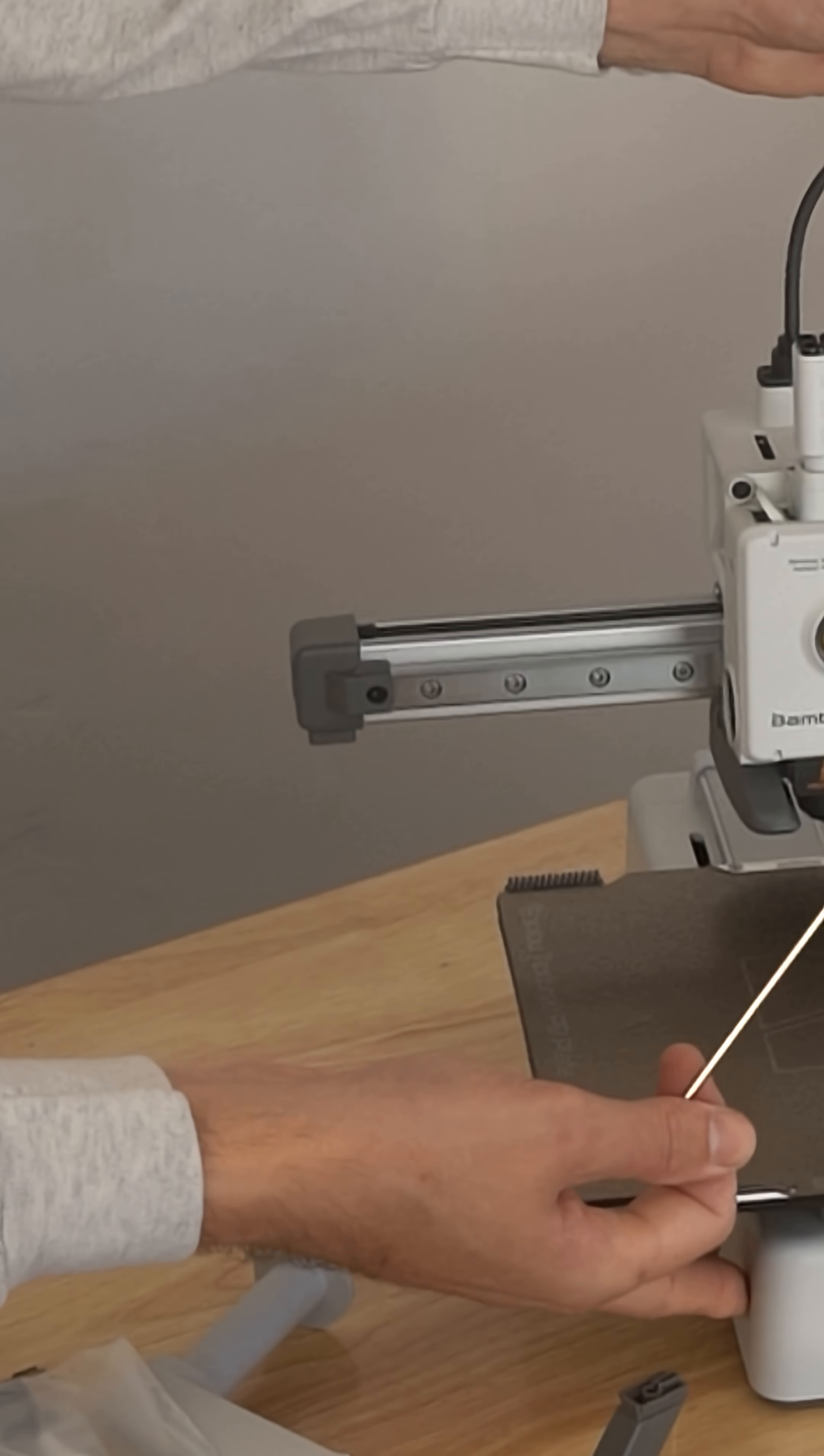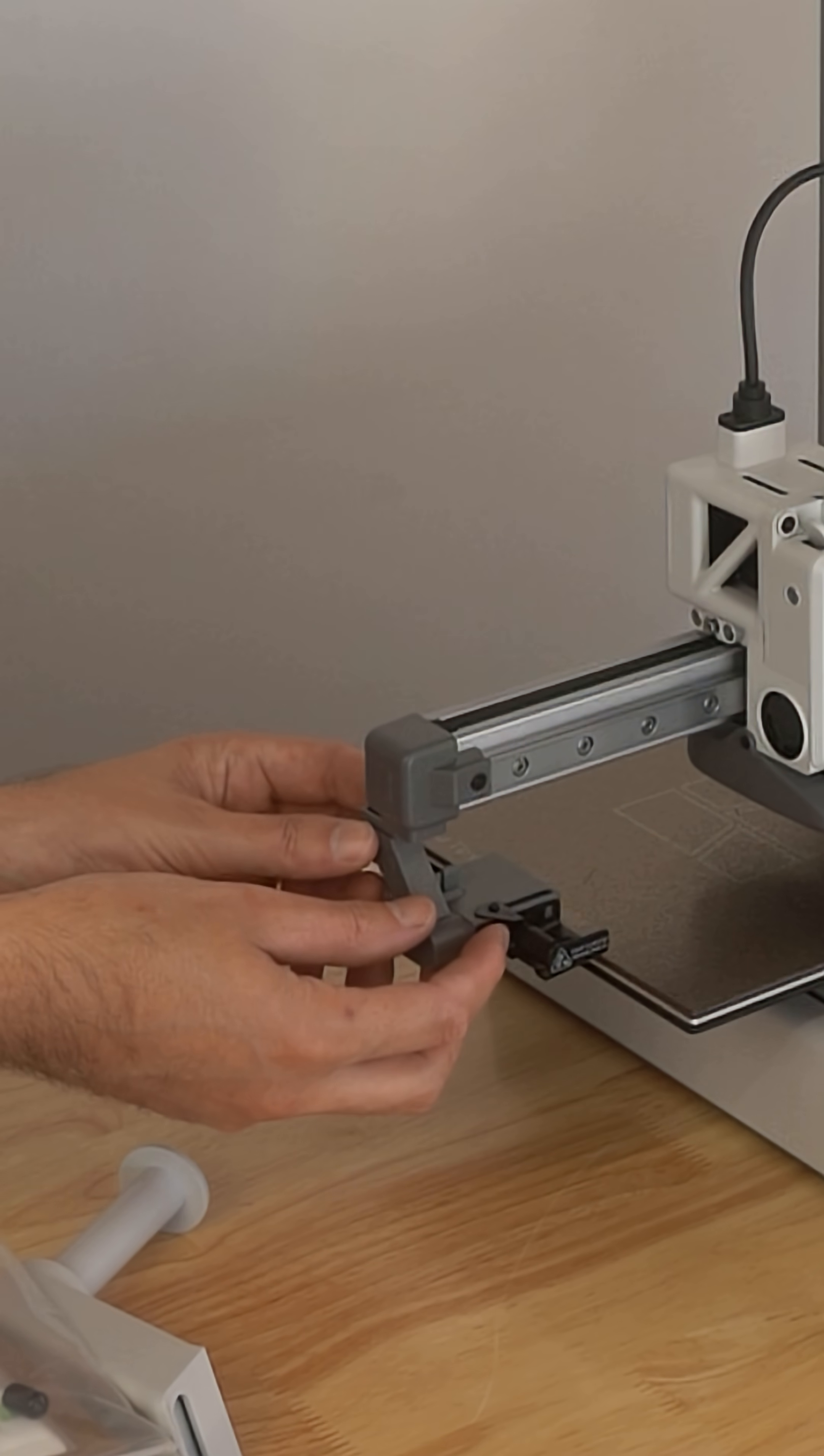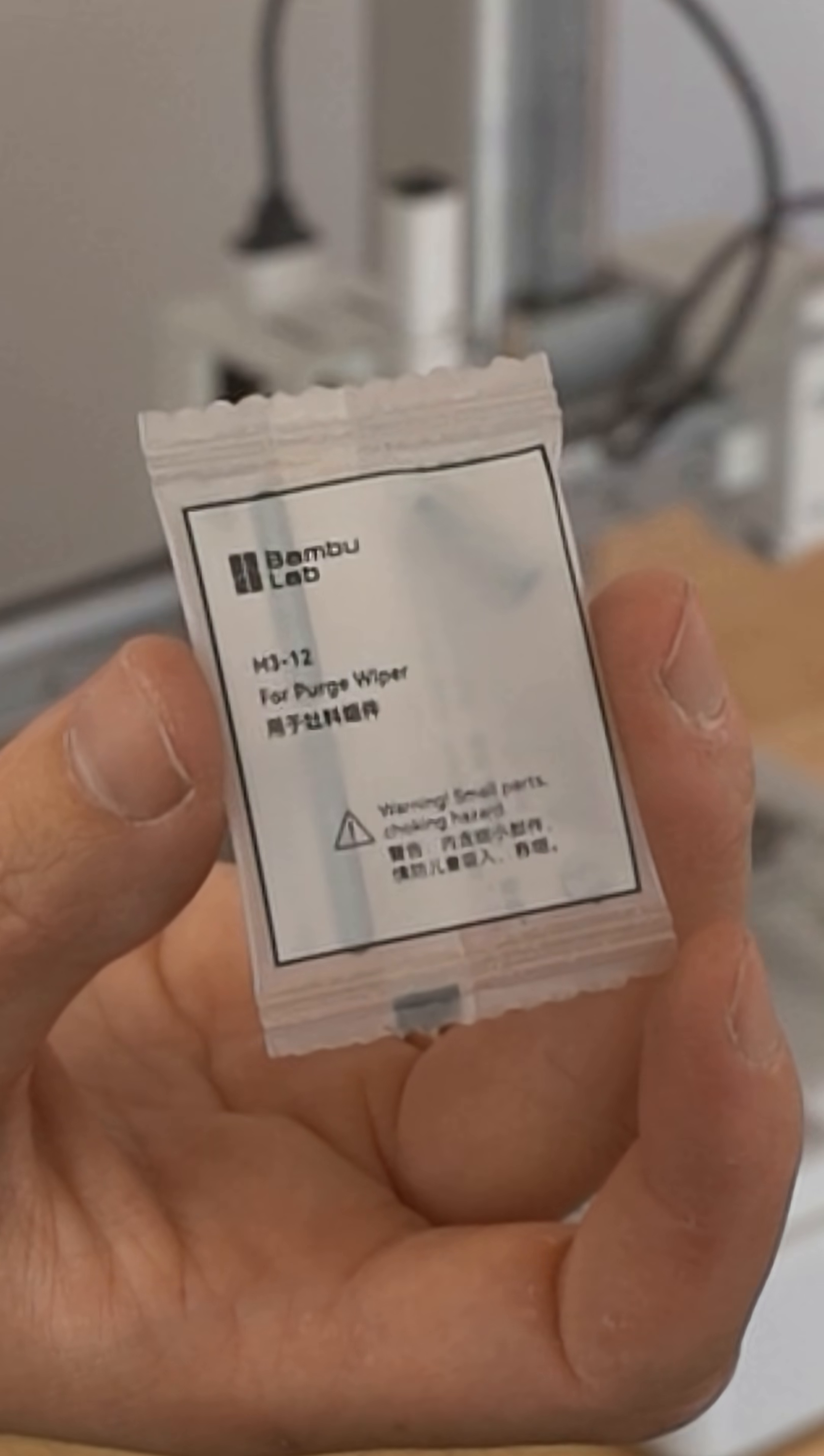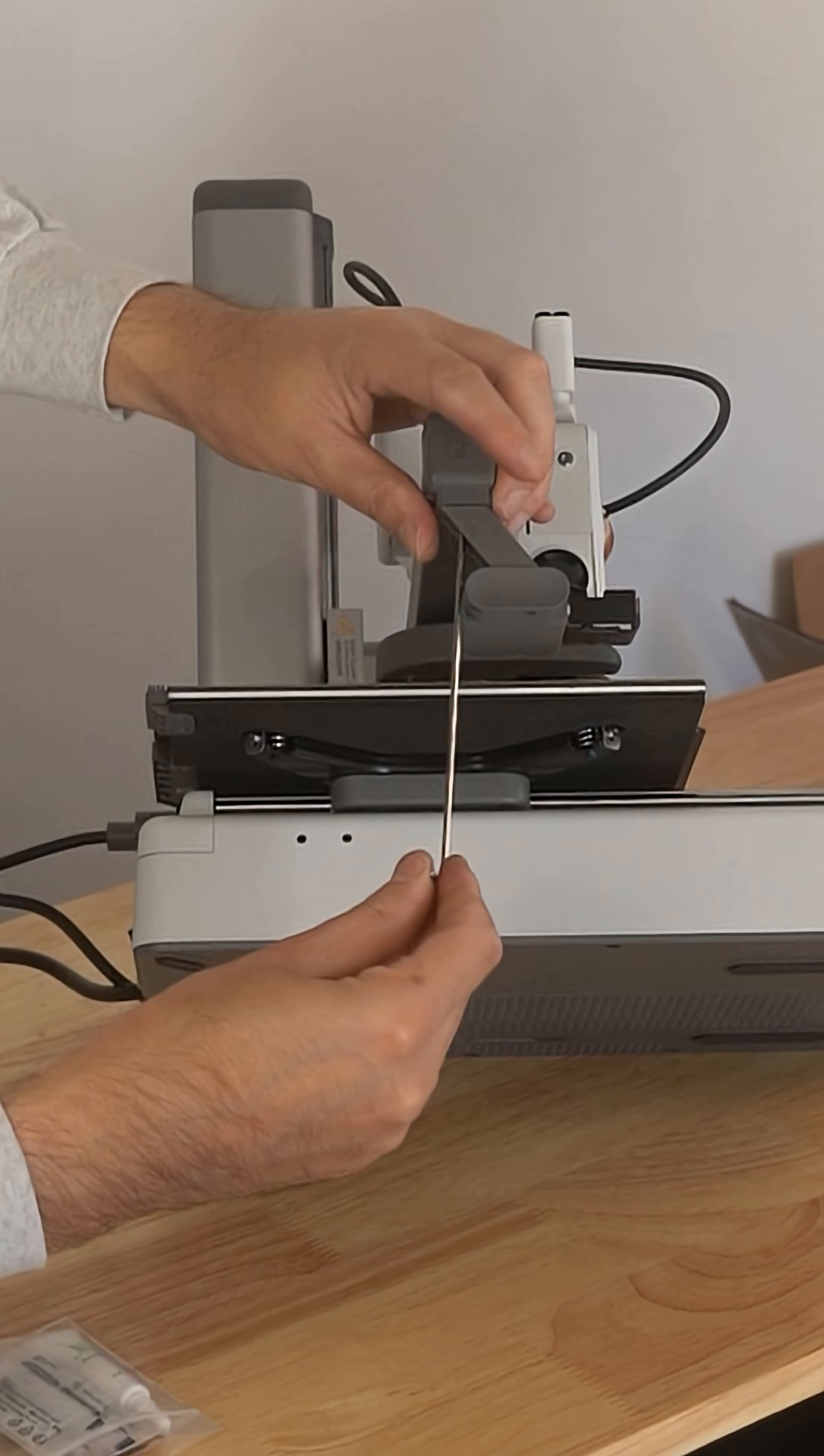Next, we'll need to install what's called the scraper. This is the scraper here. It slides in from the back like so, and you'll find the scraper bolt in the parts bag. It's right here, and it goes up through the bottom like so, and simply tighten it with the Allen wrench.